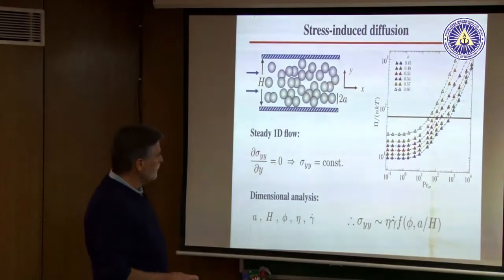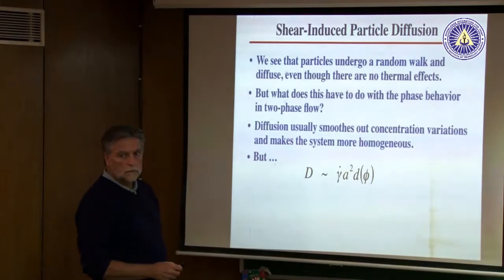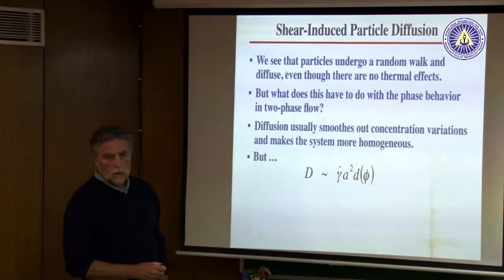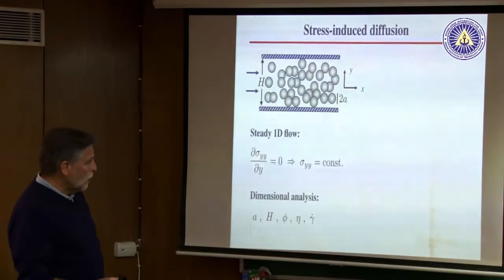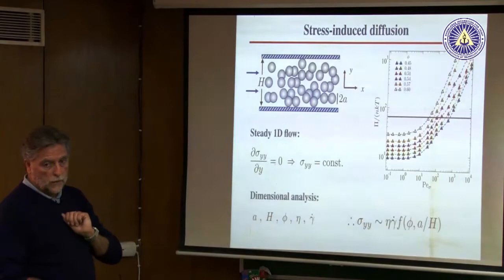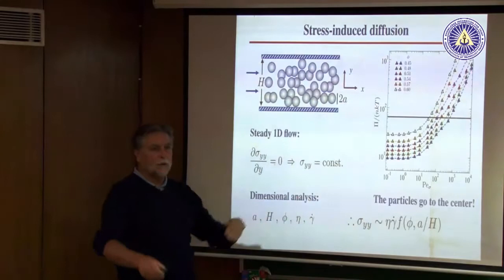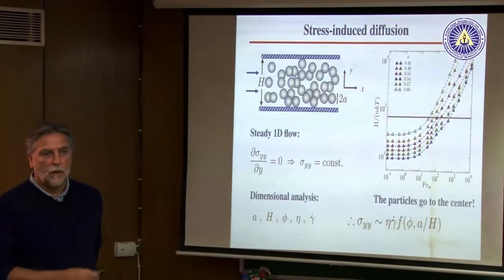One can also think of it as: since diffusivity is proportional to shear rate, there's more diffusivity in the high shear rate region (near the wall) and less in the low shear rate region (center), driving particles away from the walls. There is a caveat associated with that interpretation — we'll come to that. And the stress curve as a function of shear rate for different concentrations: walking along a constant-stress line, if the shear rate varies, the concentration must vary to keep the stress constant.